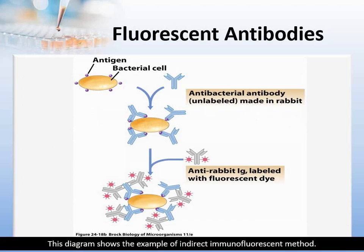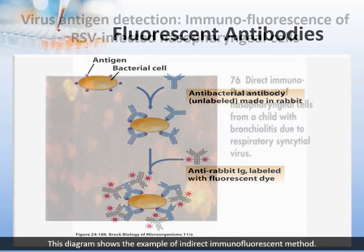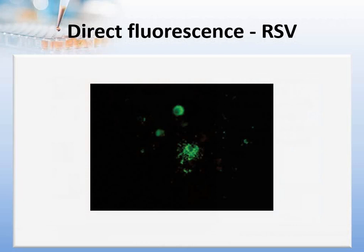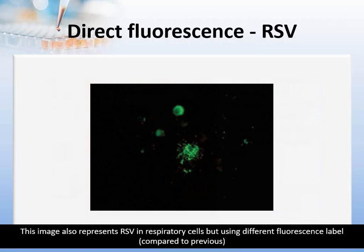This diagram shows an example of the indirect immunofluorescence method. This fluorescent microscopic image shows the presence of respiratory syncytial virus or RSV in a nasopharyngeal cell. This image also represents RSV in respiratory cells but using different fluorescent labels compared to the previous one.